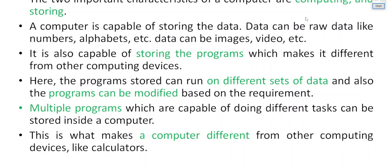A computer can be used to store information and also to do computations. Those are the two main advantages — storing and computing. That's why a computer is sometimes called a stored program computer, because we can store programs and these programs can vary — you can load many programs and replace them depending on your requirement. Unlike a calculator, where the program is fixed, in a computer the program can be changed. The computer operates on raw data — numbers, alphabets, etc.